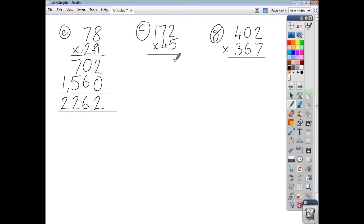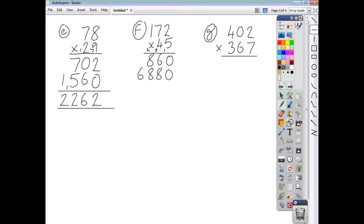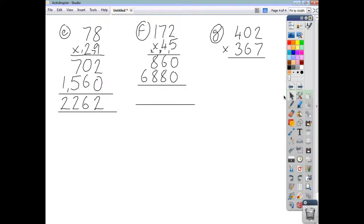Let's try this one. 5 twos are 10. 5 sevens, 35. Add the 1 is 36. And 5 ones are 5, add the 3, 8. Write a 0 because the 4 represents 4 tens. 4 twos are 8. 4 sevens are 28. And 4 ones are 4, add the 2, 6. Adding it all up to get our final answer, we end up with a final answer of 7,740.